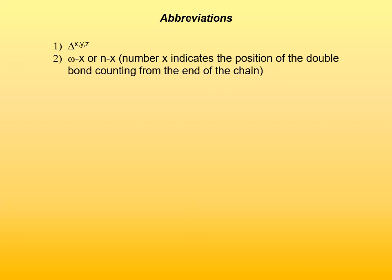Another commonly used abbreviation labels fatty acids as omega fatty acids, or sometimes n fatty acids, written as omega-x or n-x, where x indicates the position of the double bond counting from the methyl end of the chain. So omega-3 means there is a double bond three carbons away from the methyl end of the chain, omega-6 means six carbons away, and so on.